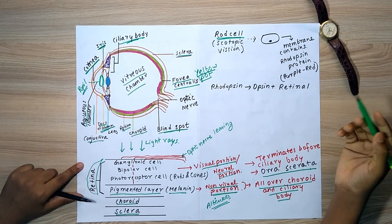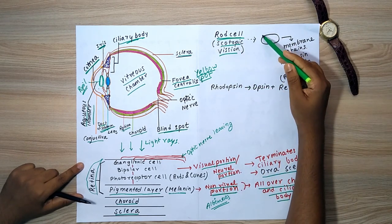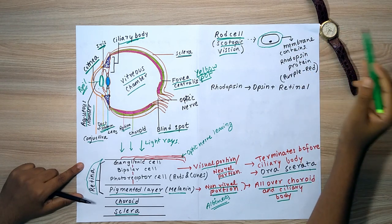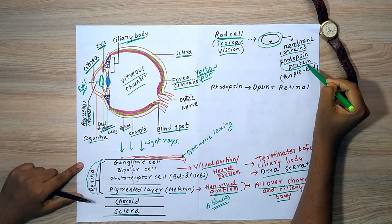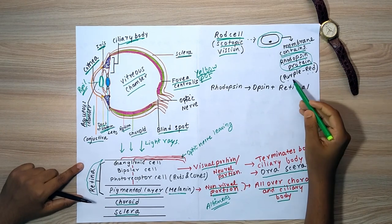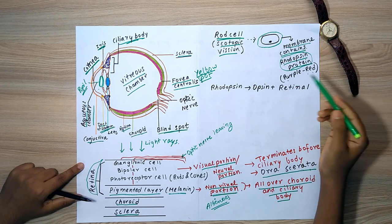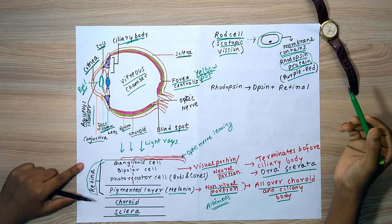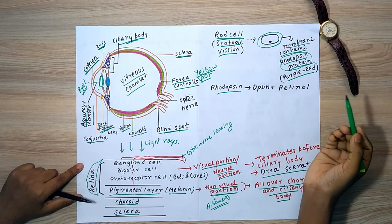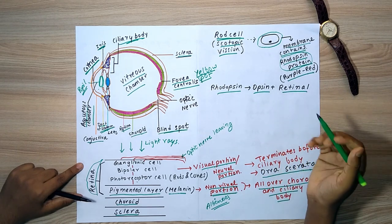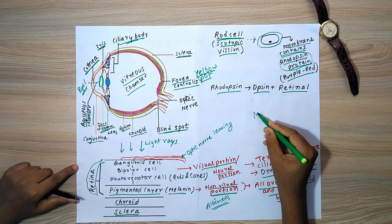Rod cells help us see in night and low light conditions. This low-light vision is known as scotopic vision. The plasma membrane of the rod cell contains rhodopsin pigment, which is a protein that is purplish-red in color. When rhodopsin breaks down, it yields two compounds: opsin, which is a protein, and retinal, which is an aldehyde of vitamin A and is orange in color.